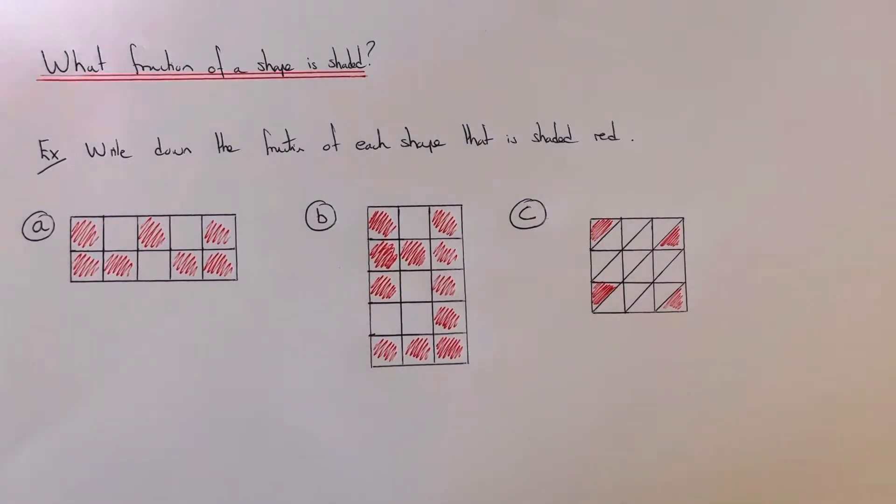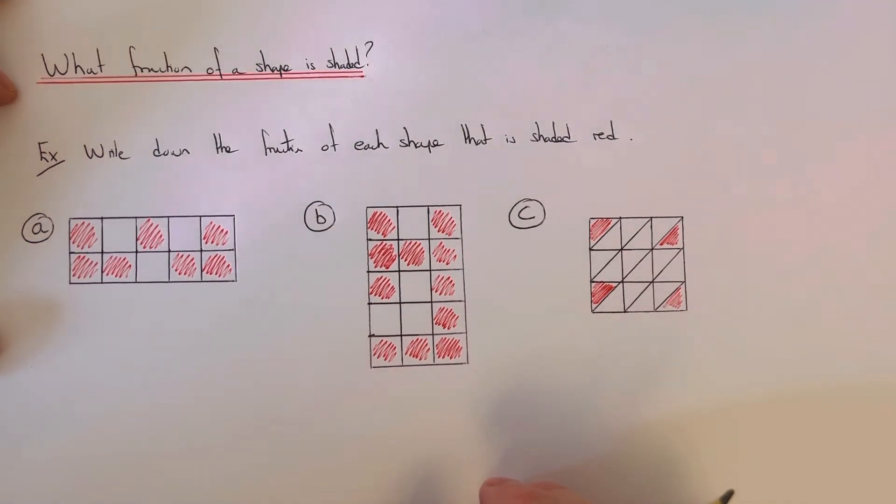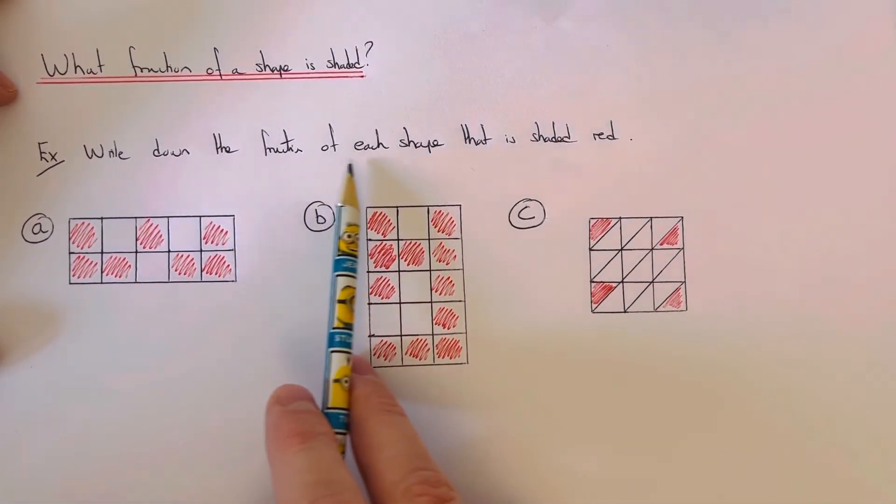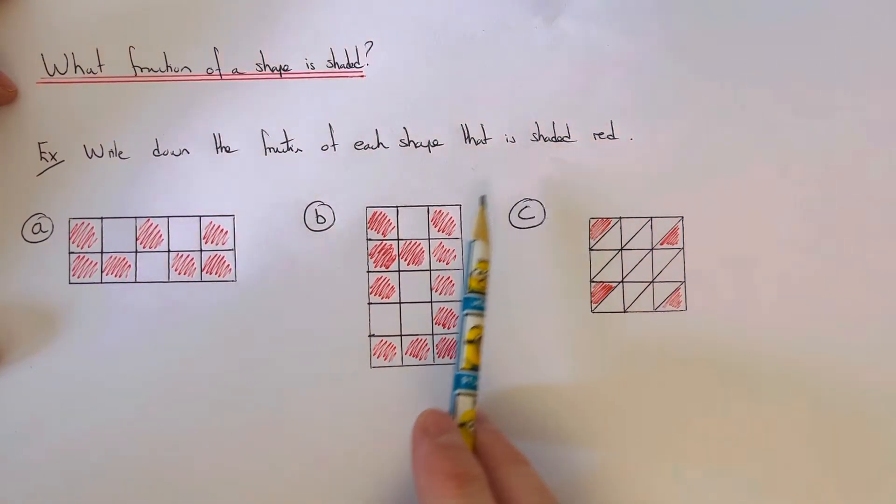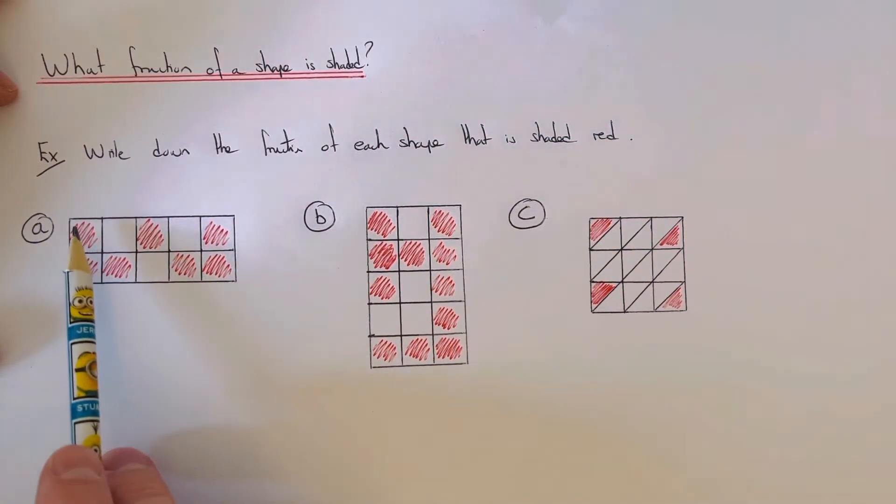Hi guys, welcome back! This is Maths 3000. Today I'm going to show you how to write down the fraction of a shape which is shaded. So let's have a look at the three examples here. We've got to write down the fraction of each shape that is shaded red.